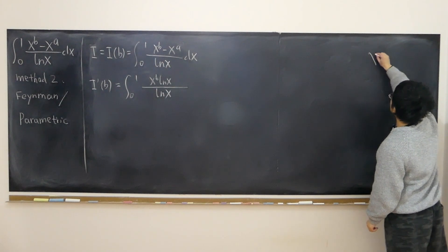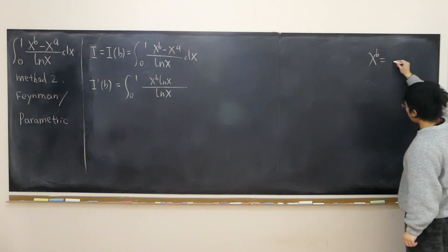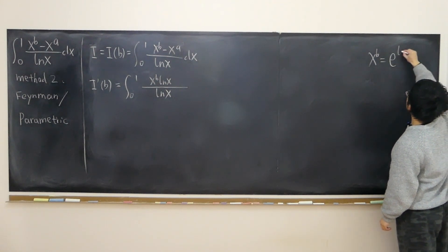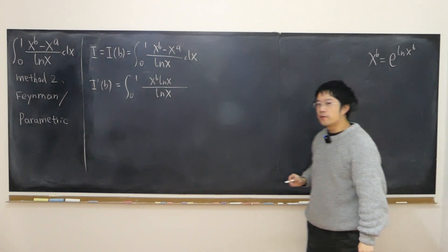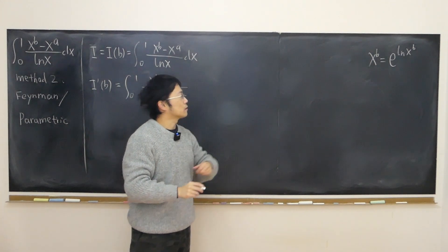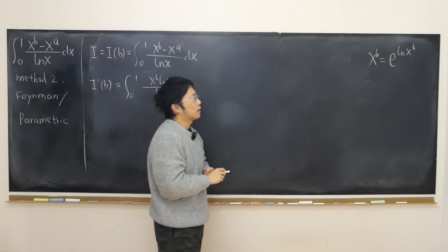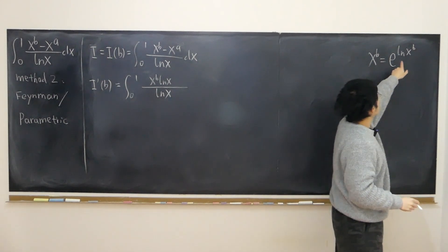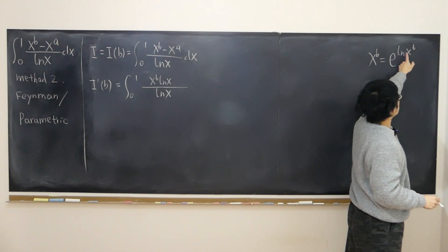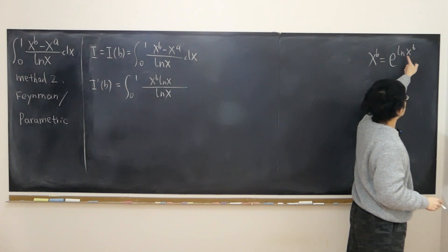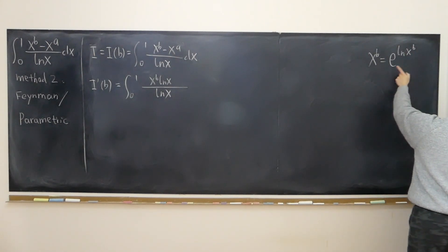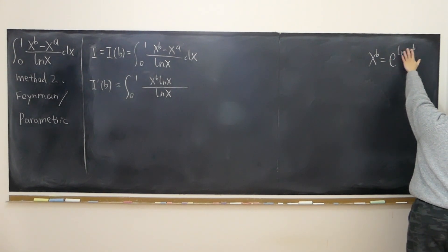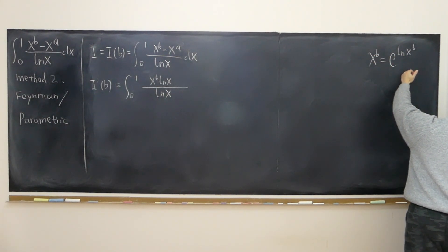Let me quickly go through why the derivative of x^b equals log(x)·x^b. So x^b — changing the base — becomes e to the power of log(x^b). The reason is that logarithm just means power: e to the power of this logarithm equals x^b.